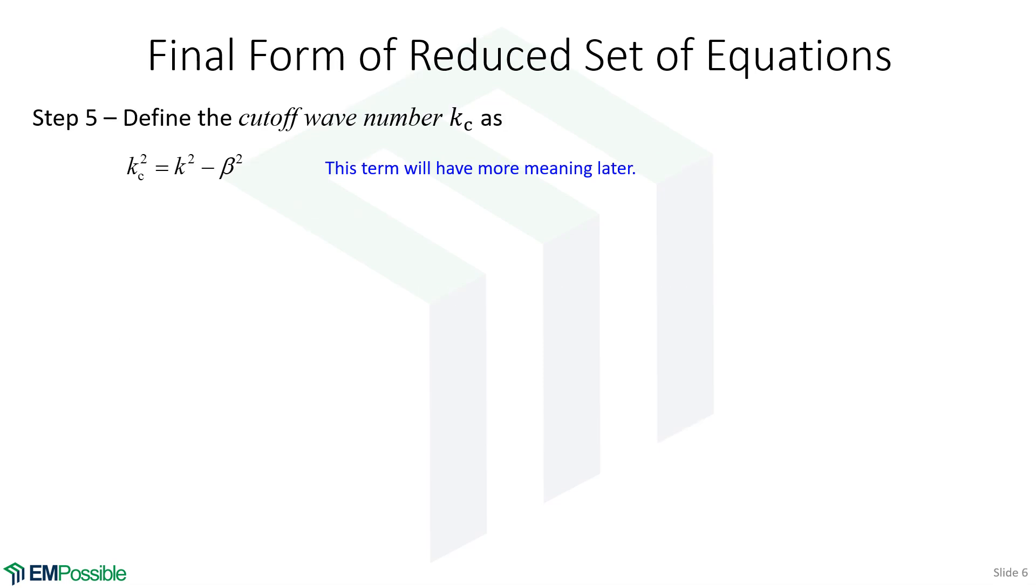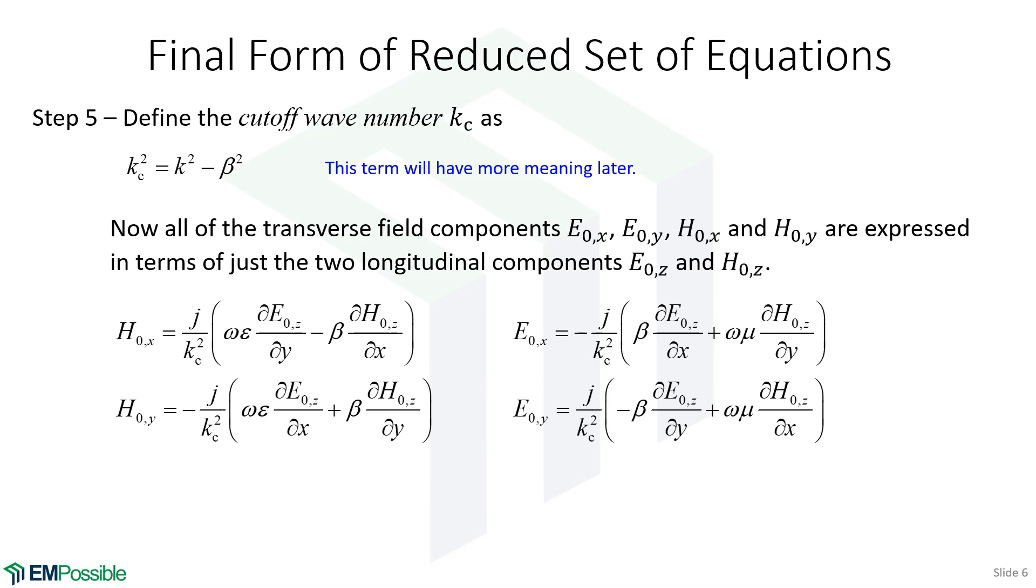Now I'm going to define a cutoff wave number. We keep seeing this K naught squared minus beta squared, where K is the wave number and beta is the phase constant. We keep seeing this difference. So for now, it's just a substitution of variables. We're going to call it Kc squared. This will have more meaning later on. Right now it's just a substitution. That lets us write these four equations that we just derived a little bit more simply because we had a K squared minus beta squared on the outside. And now it's just a Kc squared. So we have all four components, the tangential components in terms of the longitudinal components, written a little bit more compactly. So we're not going to touch those anymore. This will be the final set of four equations that once we have solutions for E naught Z and H naught Z, we can plug them into these four to get expressions for the other field components.